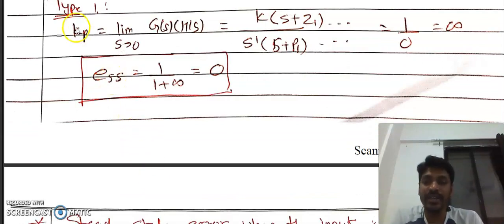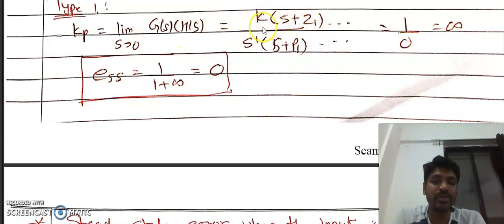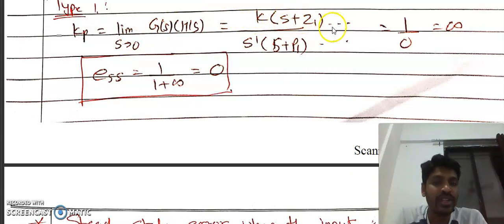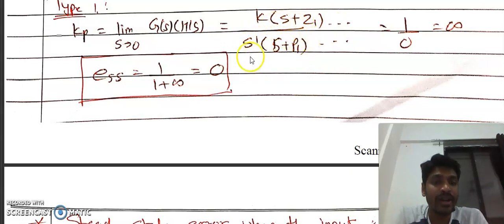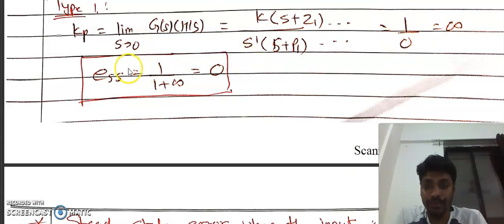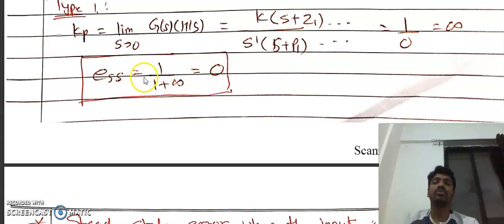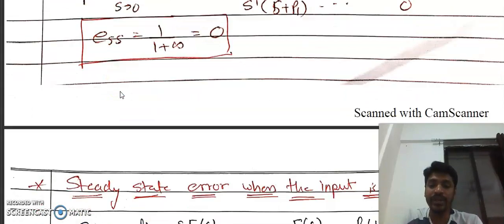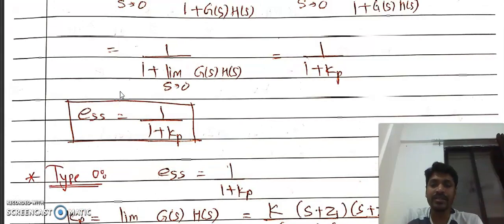For a Type 1 system, Kp = lim(S→0) K·(S+z1)(S+z2)... / [S^1 · (S+p1)(S+p2)...]. Substituting S = 0, the denominator contains S^1 = 0, making the denominator zero, so Kp = infinity. Therefore E_SS = 1 / (1 + ∞) = 1/∞ = 0. For a Type 1 system with unit step input, the steady state error is zero.